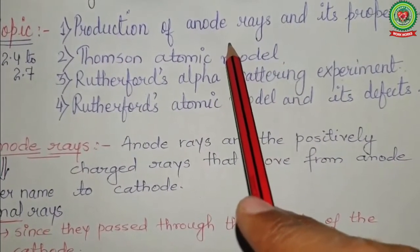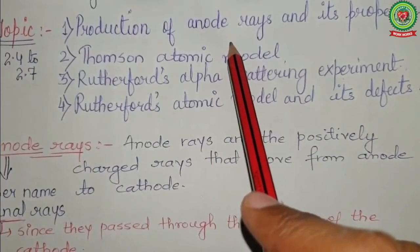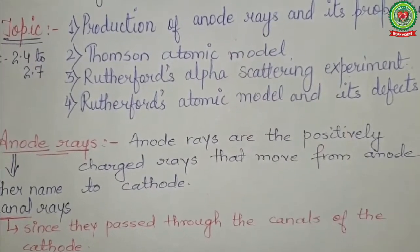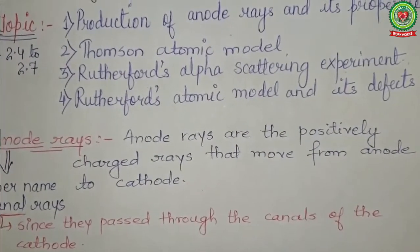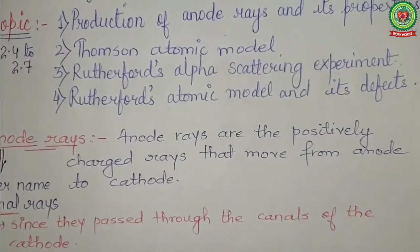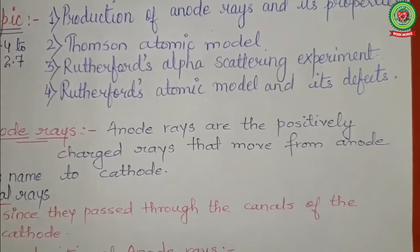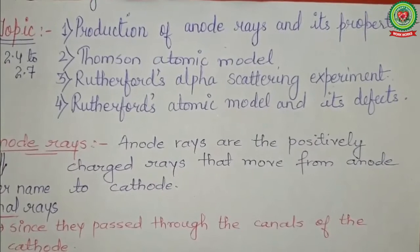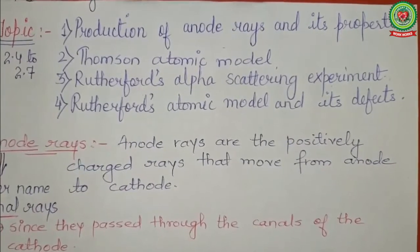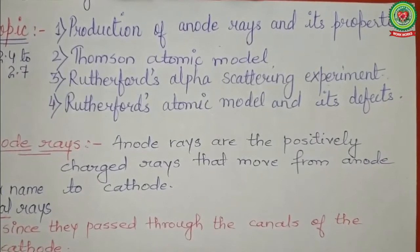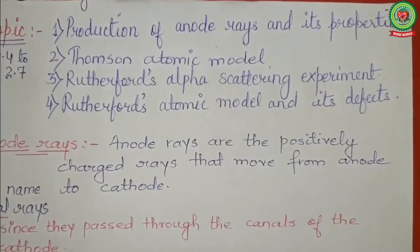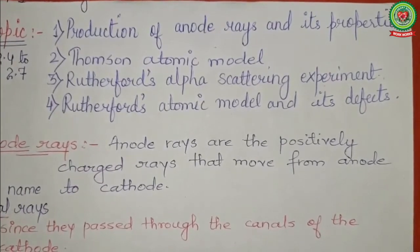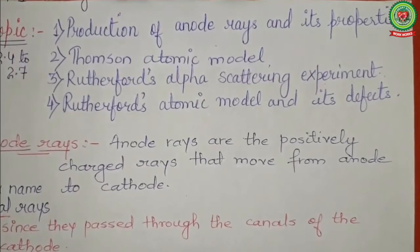Why did anode rays come into picture? As we already know, yesterday we discussed cathode rays. With the discovery of the electron, scientists started looking for positively charged particles, which were naturally expected because matter is electrically neutral. If there is a negatively charged particle, there will of course be a positively charged particle. Due to this consideration, in 1886 Goldstein performed an experiment — a carry-forward of the cathode ray tube experiment.